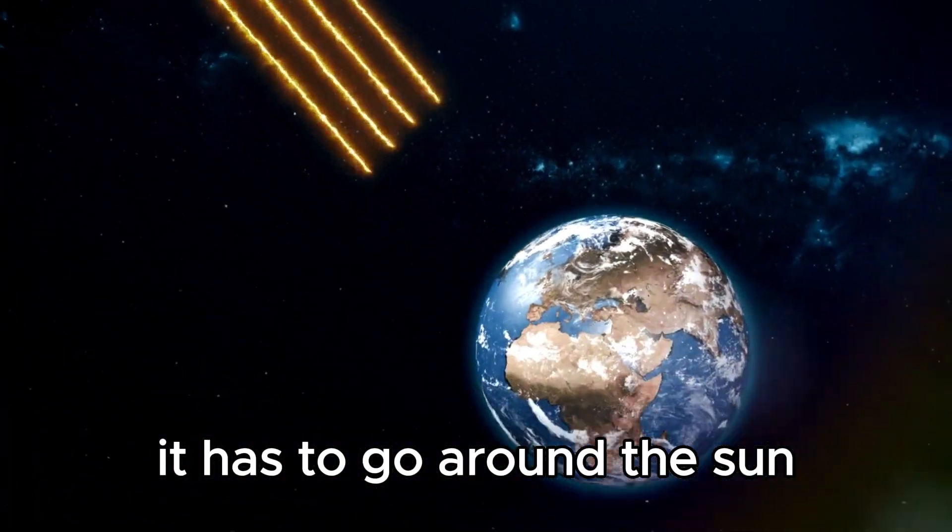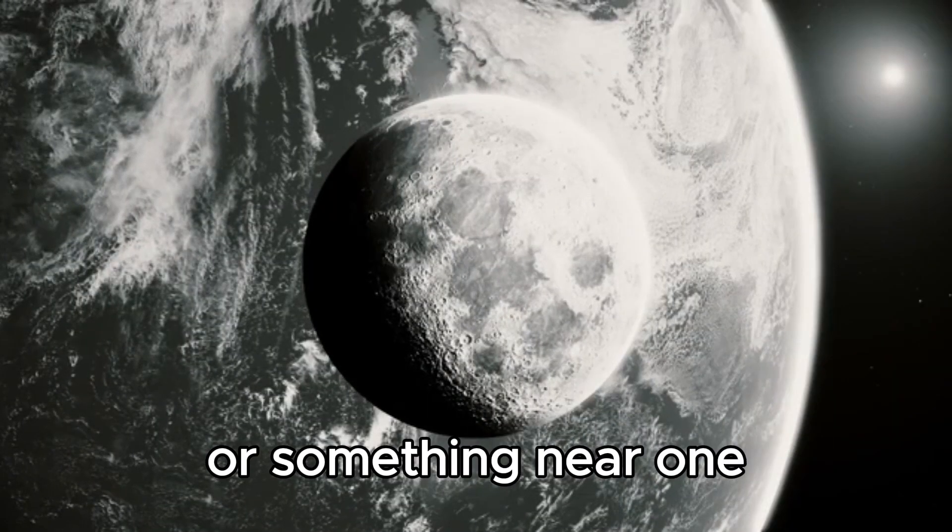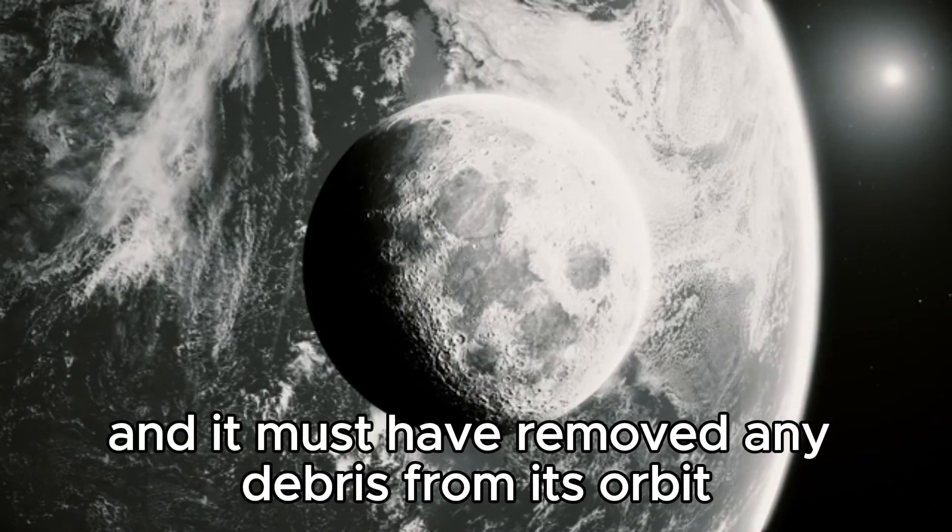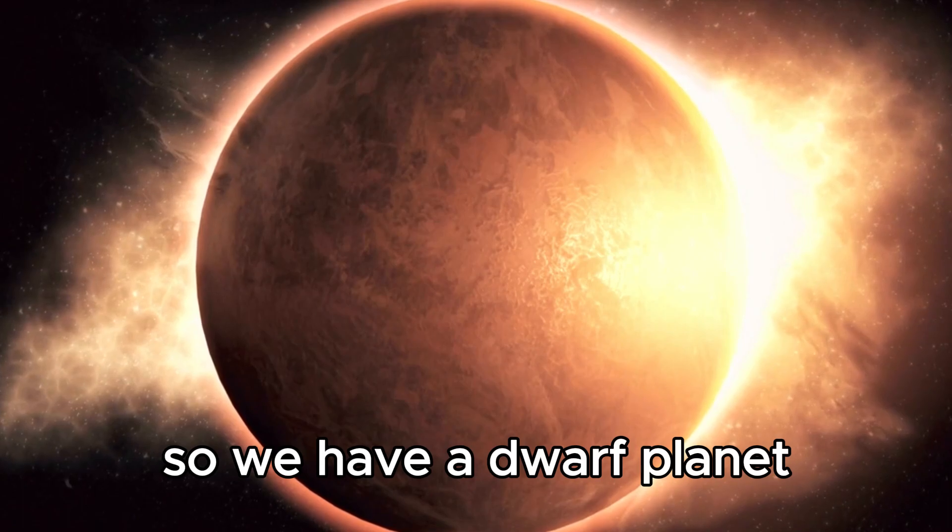It has to go around the Sun, it needs to be massive enough that its own gravity can shape it into a sphere or something near one, and it must have removed any debris from its orbit. Pluto failed the third and final evaluation, so we have a dwarf planet.